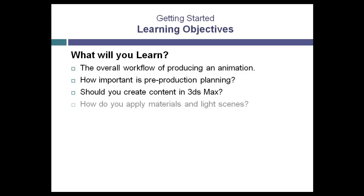Applying materials and lights is in many ways what 3ds Max is all about. This is where developing your skills can really contribute to the visual quality of your final production. It is entirely possible to take a poorly made 3D model and make it look fantastic just by adding well-created materials and properly set up lighting. On the other hand, you can take a meticulously crafted model and make it look bad fairly easily. We'll go through an overview of how to apply materials, how to create lights, and how that fits into the production process.